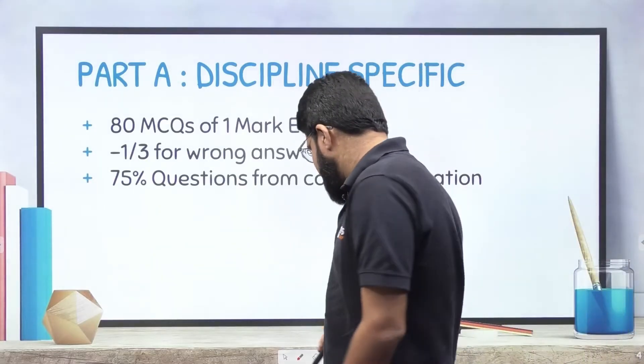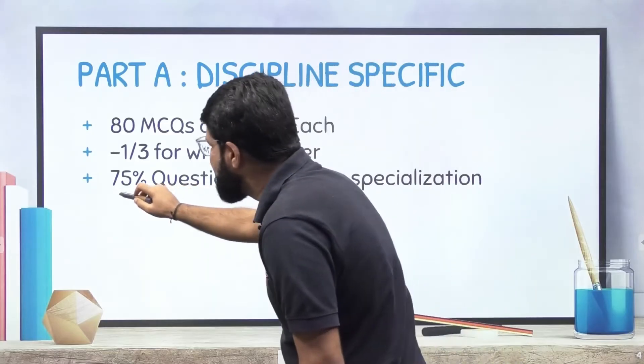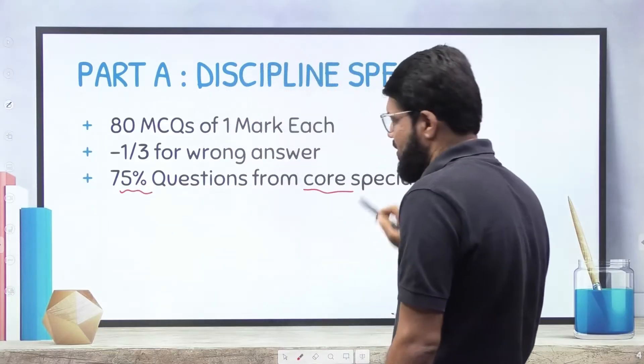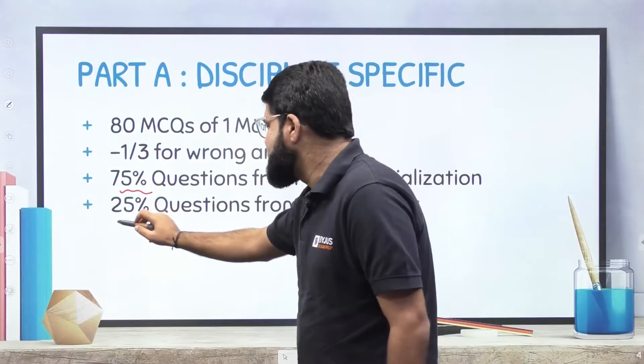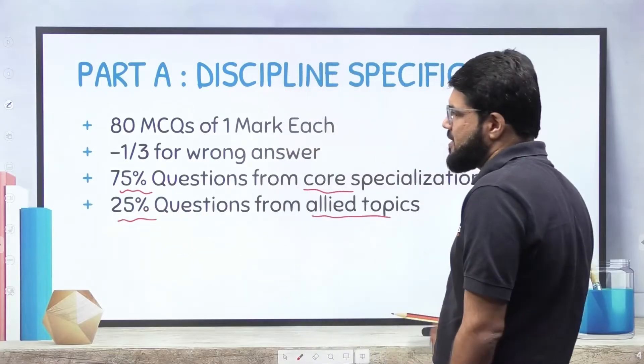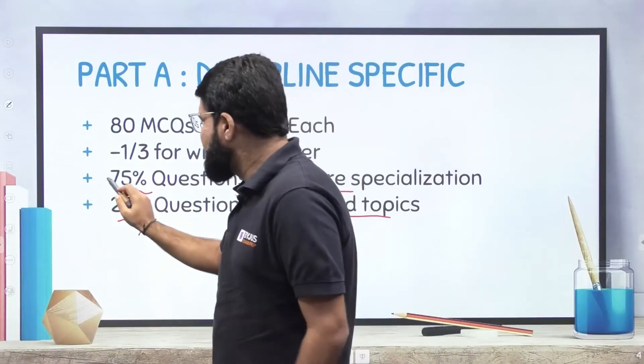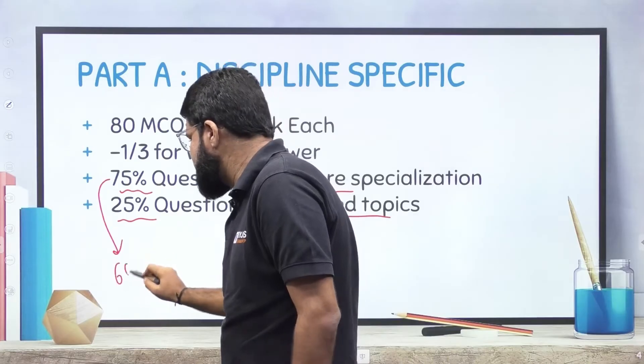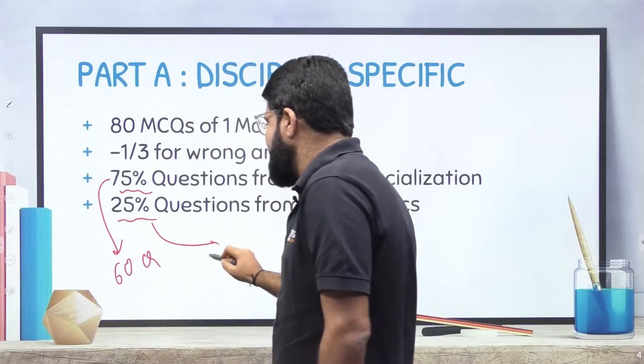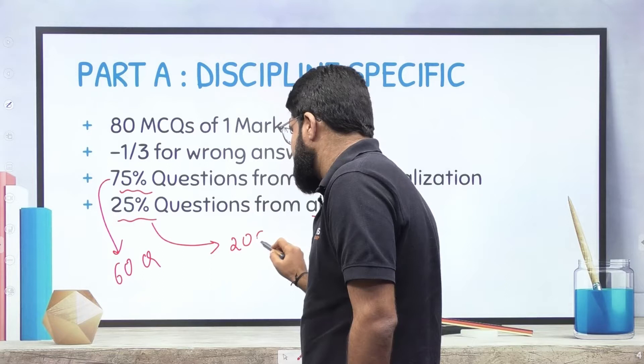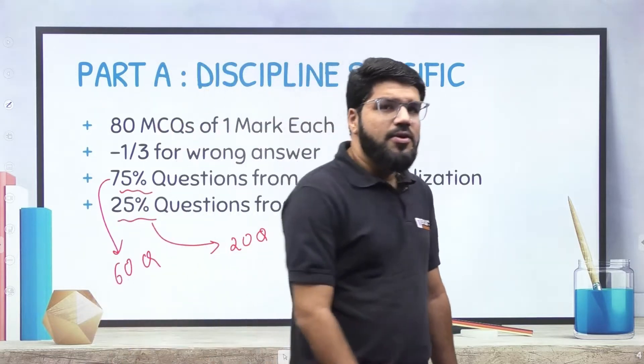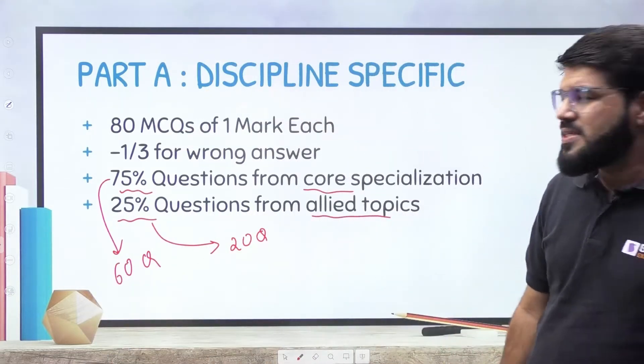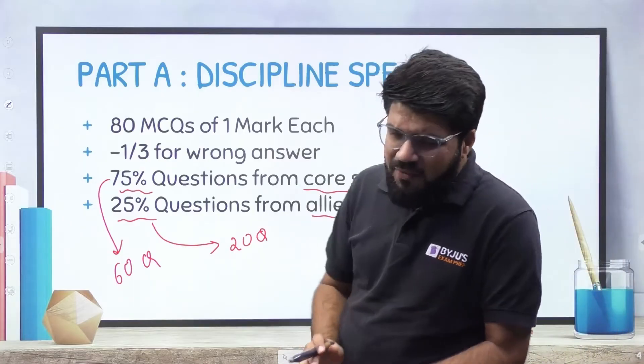Part A as I told you, 80 questions of one mark, one third negative marking for wrong answer. Now coming to the main point here, 75 percent questions are from the core, remaining 25 percent questions are from allied topics. 75 percent would mean 60 questions and 25 percent would mean 20 questions.